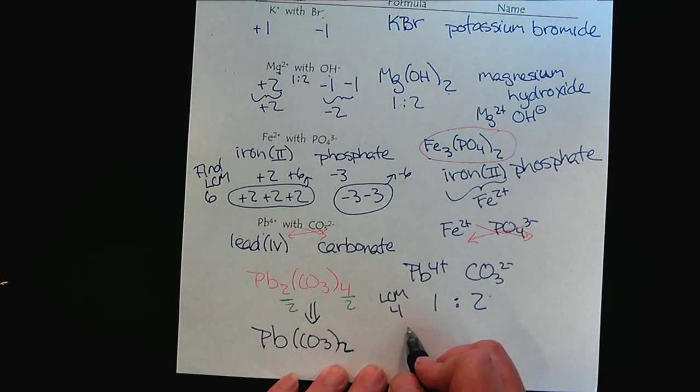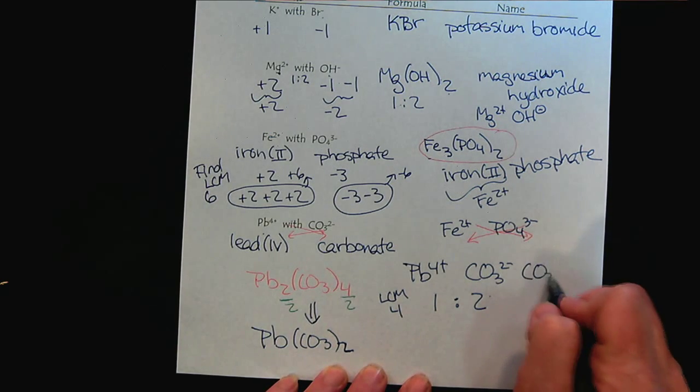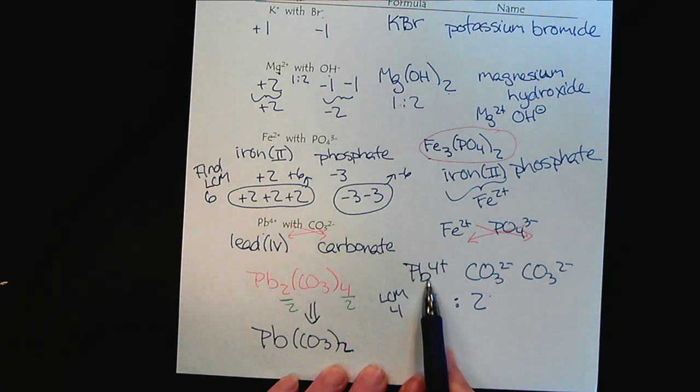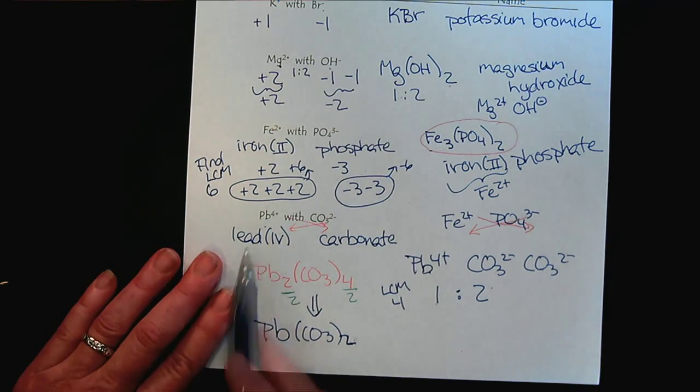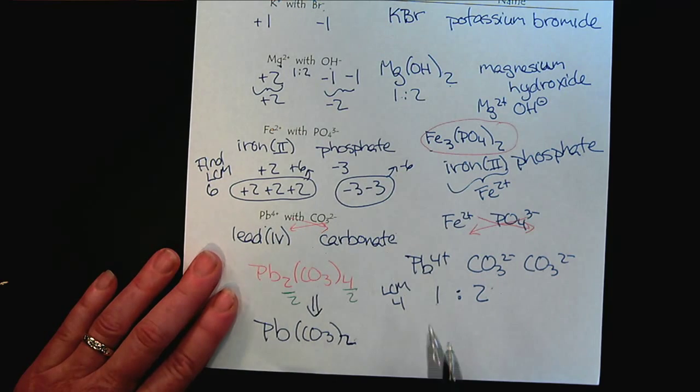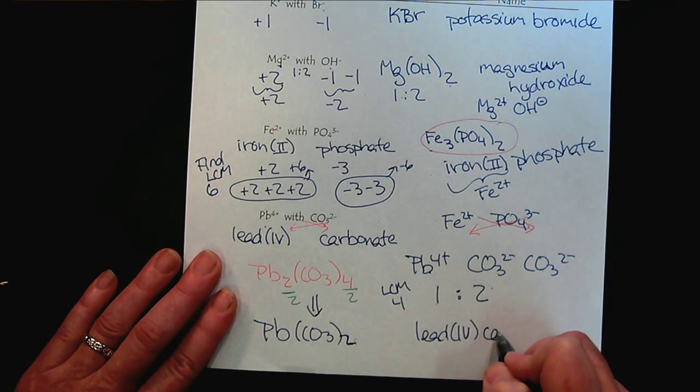We have lead 4 plus and carbonate 2 minus. So, the least common multiple will be 4. So, that tells us that we only need 1 lead, but we will need 2 carbonates. So, it would take 1 lead to make plus 4 and 2 carbonates to make minus 4. So, we would still end up with the same chemical formula. And then, making sure that we're good on our ion names, it's simply lead 4 carbonate.